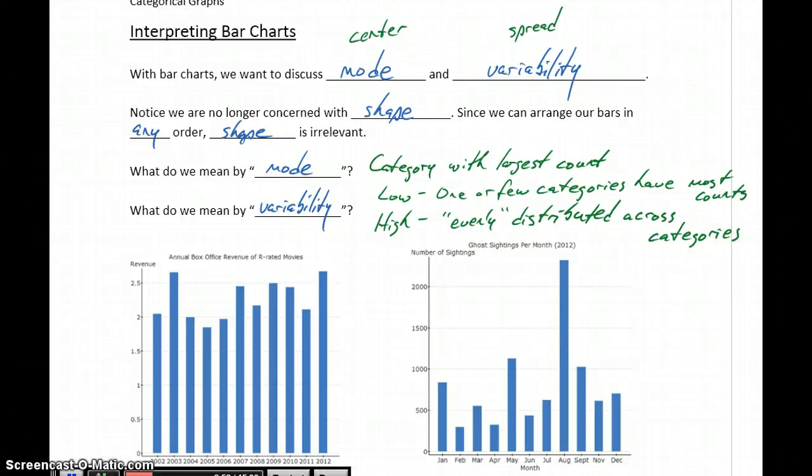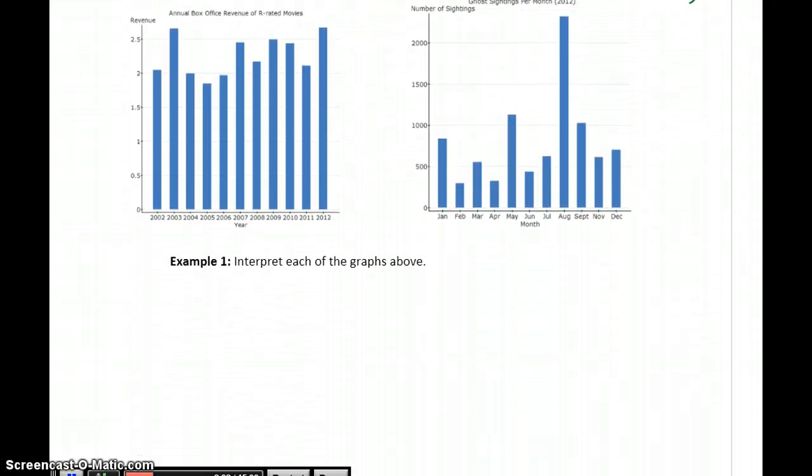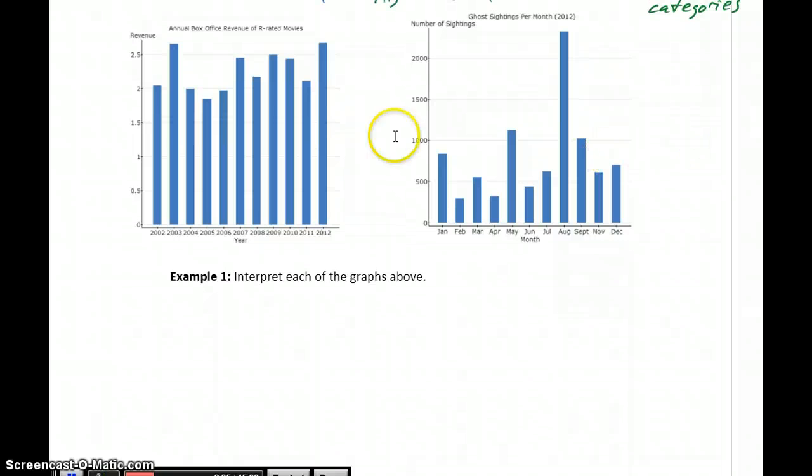So now let's use those ideas, mode and variability, to provide some interpretation for each of these graphs above. The first is the same one that we saw on the first page, annual box office revenue for R-rated movies. So let's start with that graph.